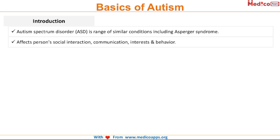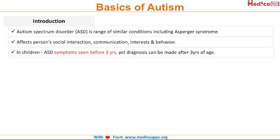In autistic spectrum disorder, it affects the child's social interaction, communication, interest, and behavioral abilities. Generally, the symptoms are seen much before the age of 3, yet in many cases the diagnosis is made even after age of 3. The signs and symptoms of autism broadly fall in three categories: changes in spoken language, behavior, and interaction with others.